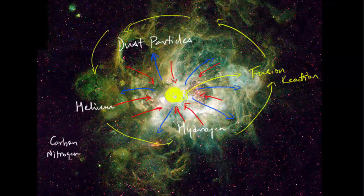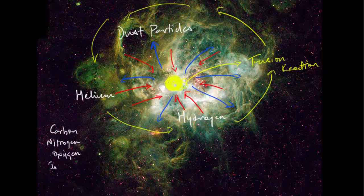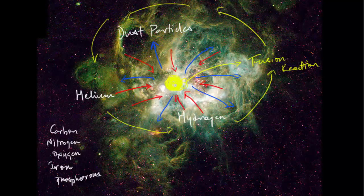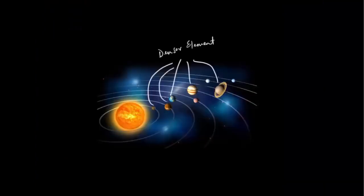The heavier elements, like carbon, oxygen, nitrogen, iron, phosphorus, silicon, etc., moved away from the center. And if you see, the Earth and all other planets are made out of denser elements than stars.